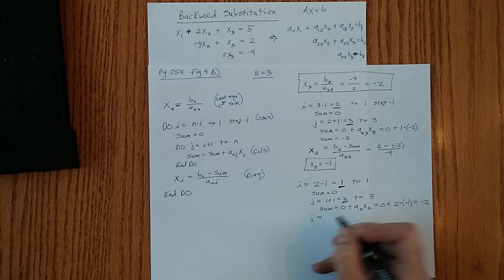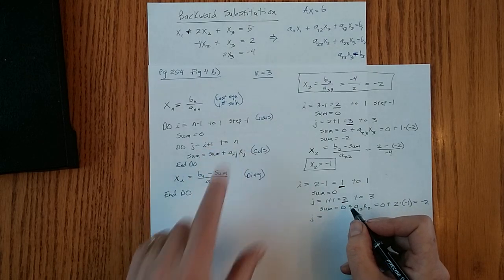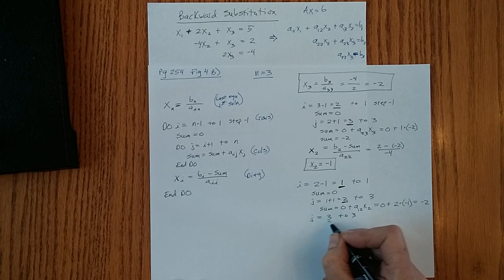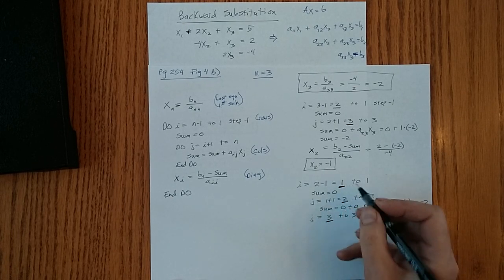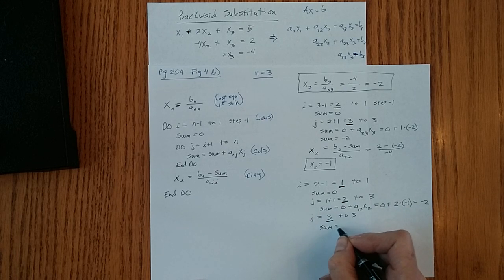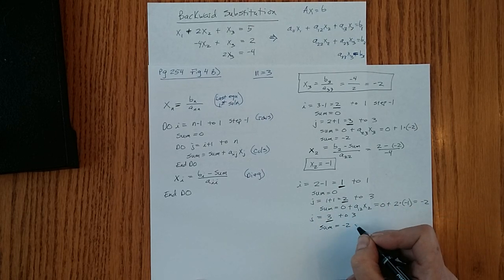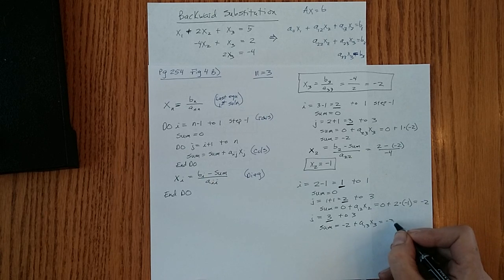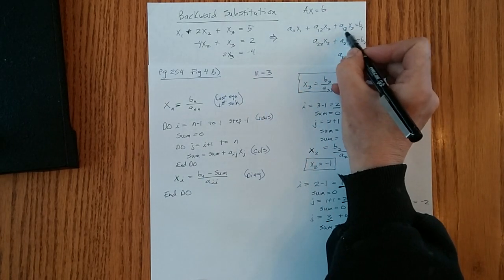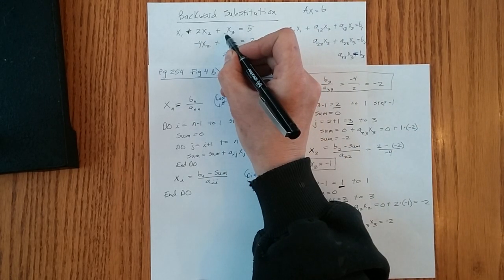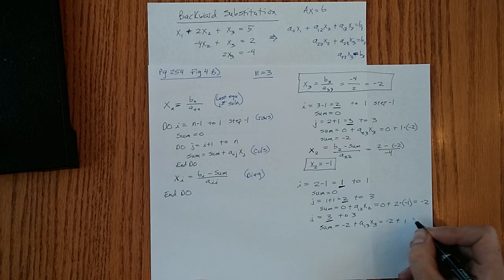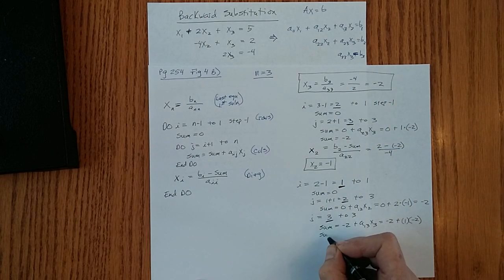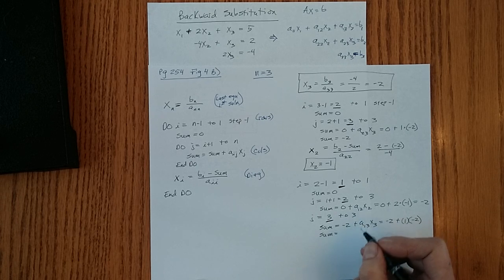We go back through and j gets incremented. 2 plus 1 is 3, and we go to 3. So this will be the last time through this loop. So right now our i is still 1, our j is 3. The sum equals sum, which is now negative 2, plus a13 x3. So that's minus 2. a13, that's this term right here, a13 is 1 for us. Plus 1 times x sub 3 is defined up here as minus 2. So sum right here is now minus 4.